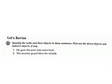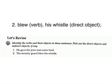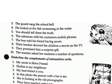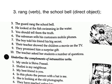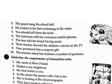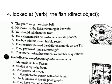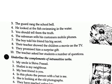2. The security guard blew his whistle. Answer: blew — verb; his whistle — direct object. 3. The guard rang the school bell. Answer: rang — verb; the school bell — direct object. 4. He looked at the fish swimming in the water. Answer: looked at — verb; the fish — direct object.